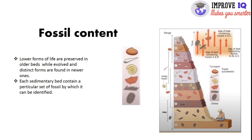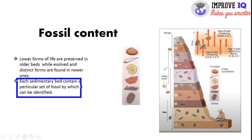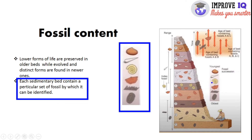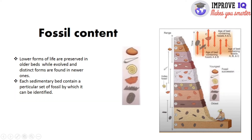The next principle is fossil content. It states that lower forms of life are preserved in older beds while evolved and distinct forms are found in newer ones. Each sedimentary bed contains a particular set of fossils by which it can be identified. The geologist uses this to determine which rock is younger and which is older. Since fossils vary in every strata of rock, this principle came into existence.